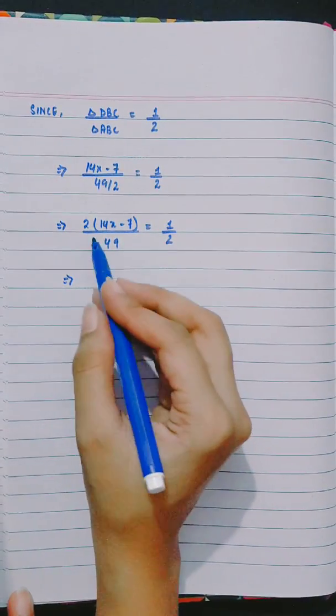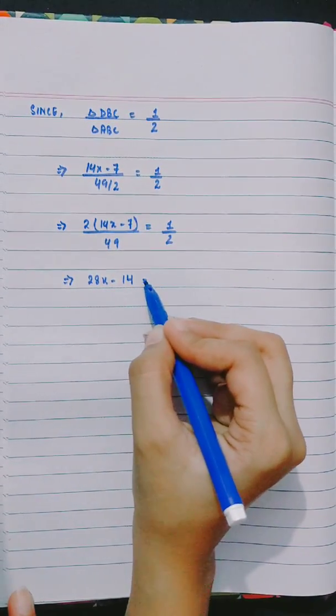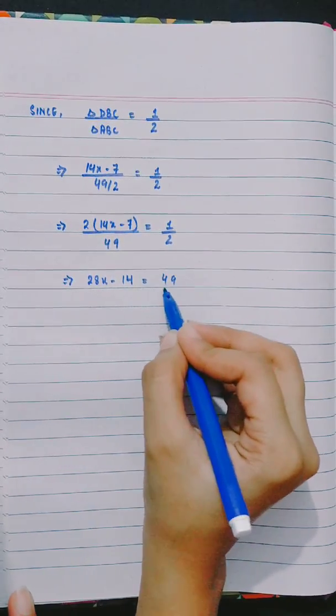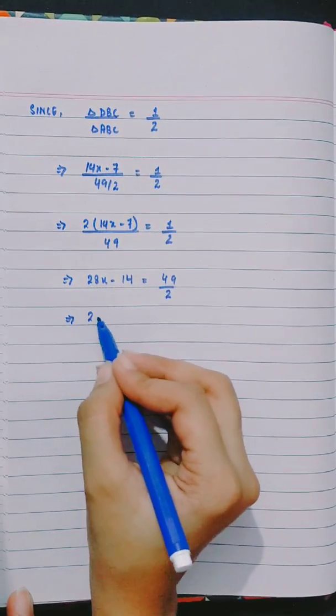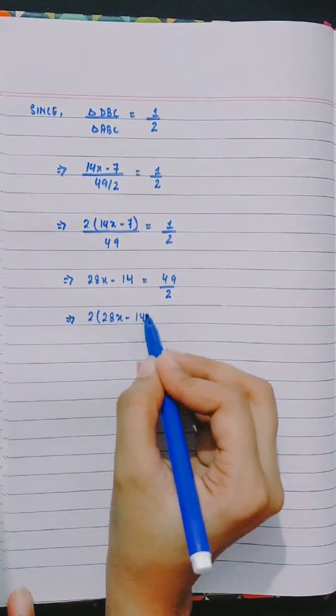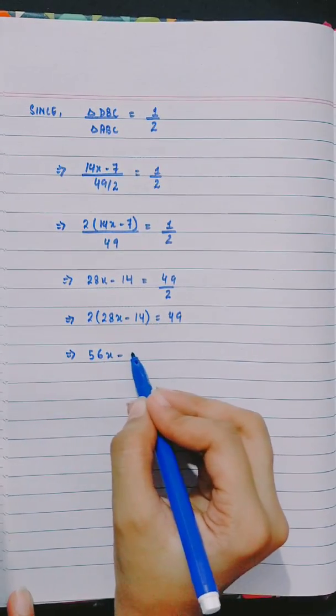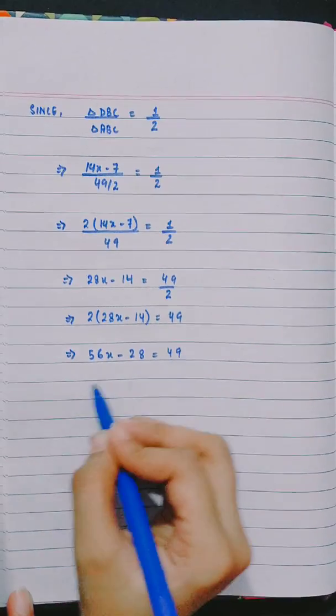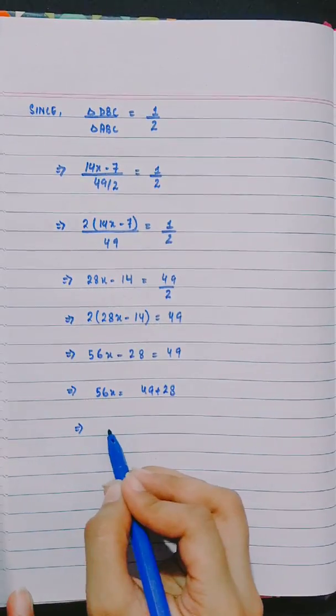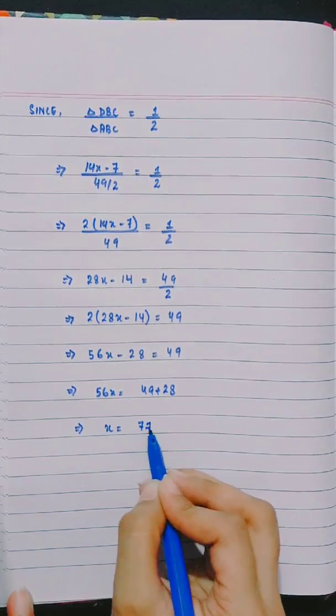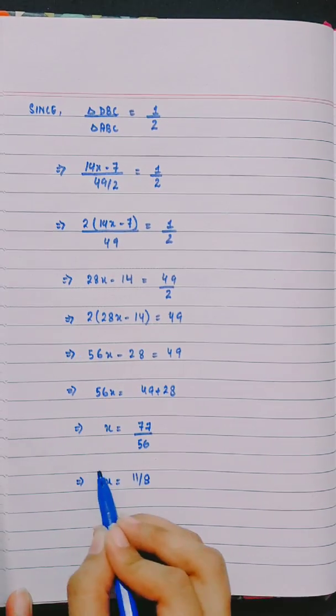Since area DBC divided by area ABC equals half, therefore (14x-7) divided by (49/2) equals half. Therefore 2(14x-7) divided by 49 equals half. 28x minus 14 equals 49 divided by 2, which gives 28x minus 14 equals 49/2 times 2, so 56x minus 28 equals 49. Therefore 56x equals 77, and x is equal to 77 divided by 56, which equals 11 by 8.